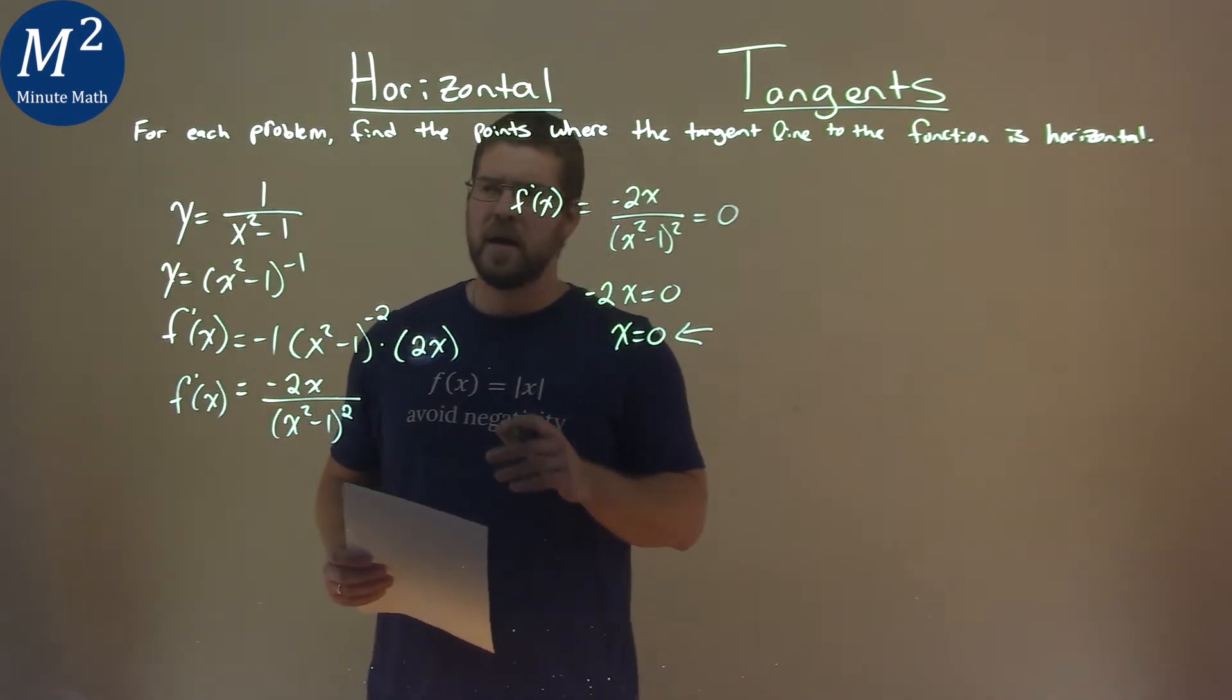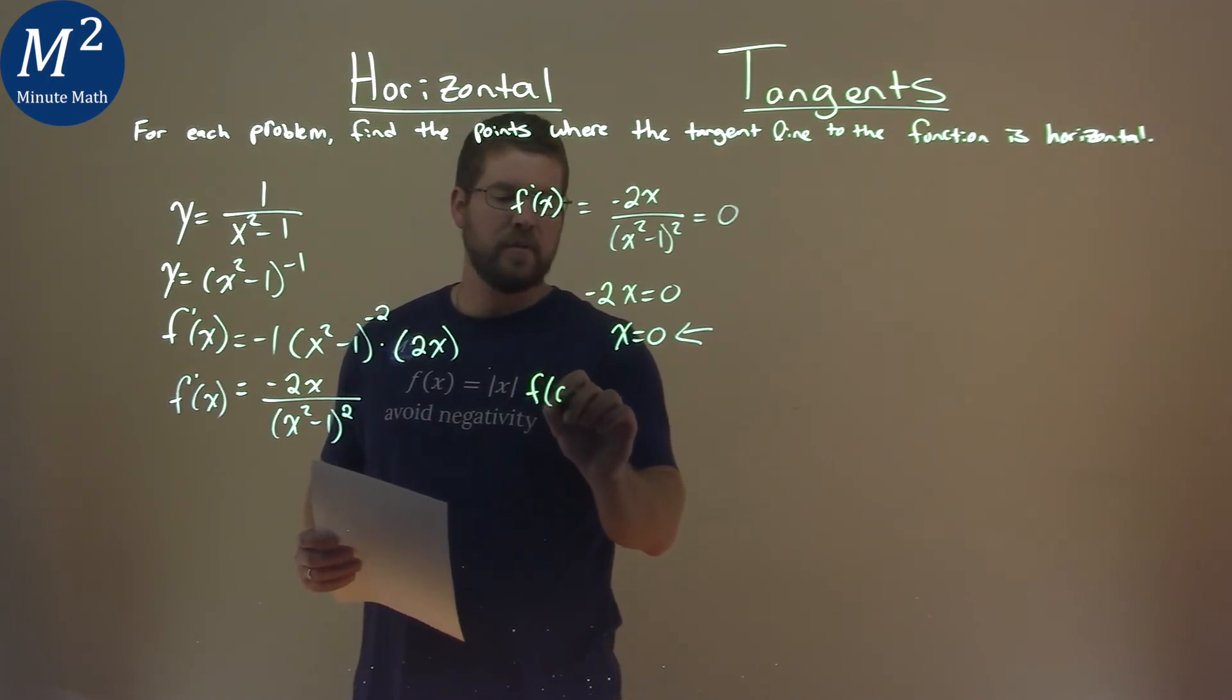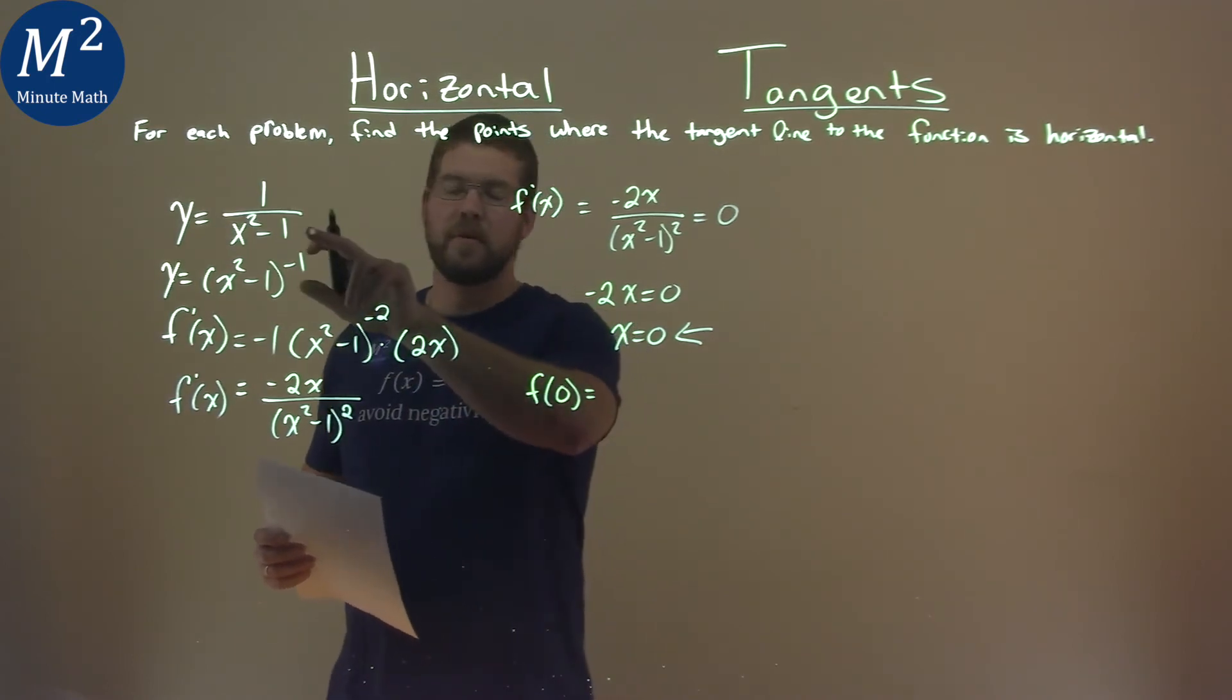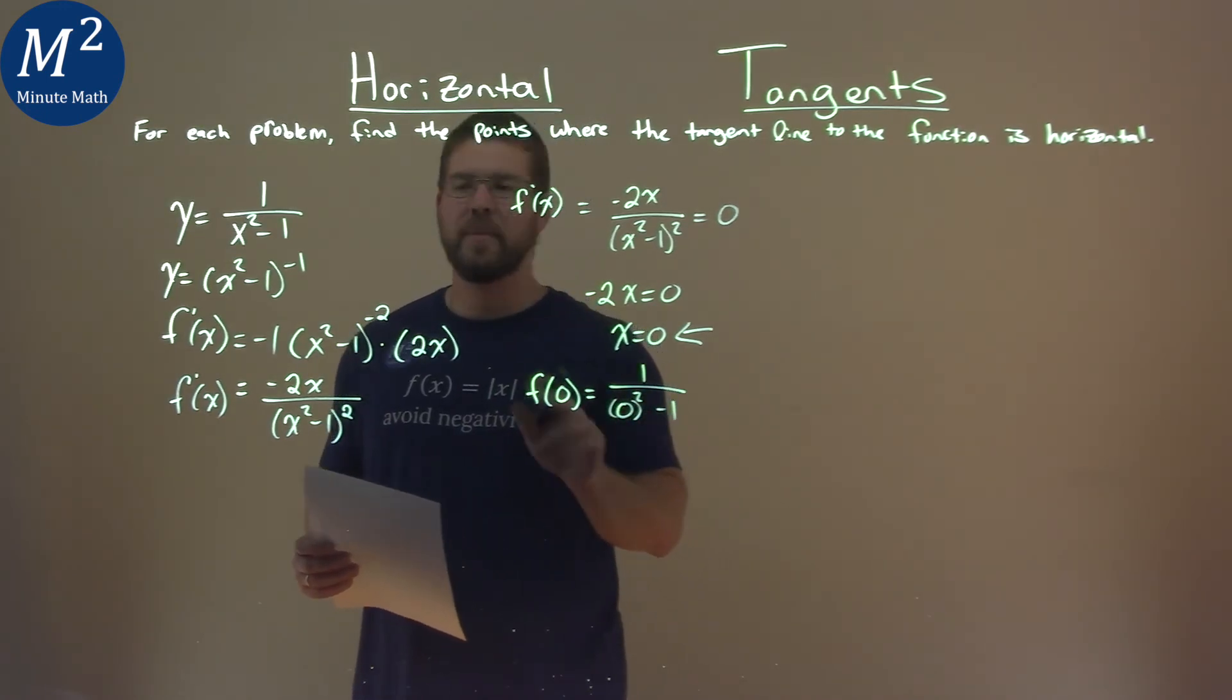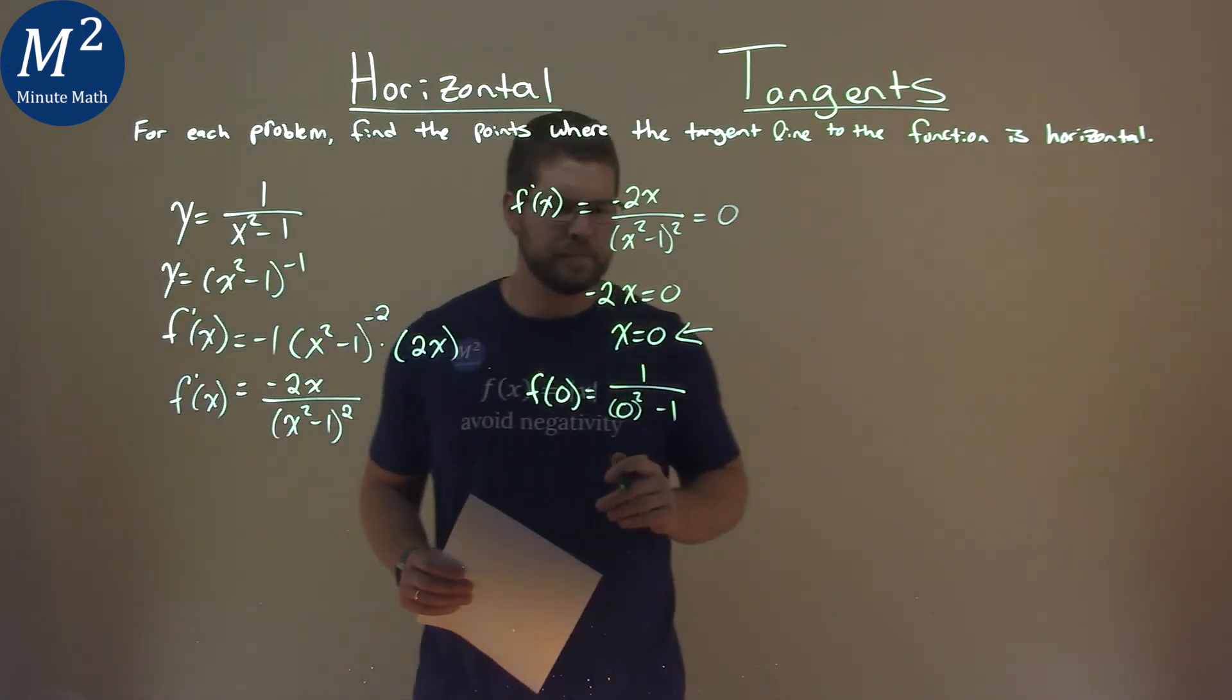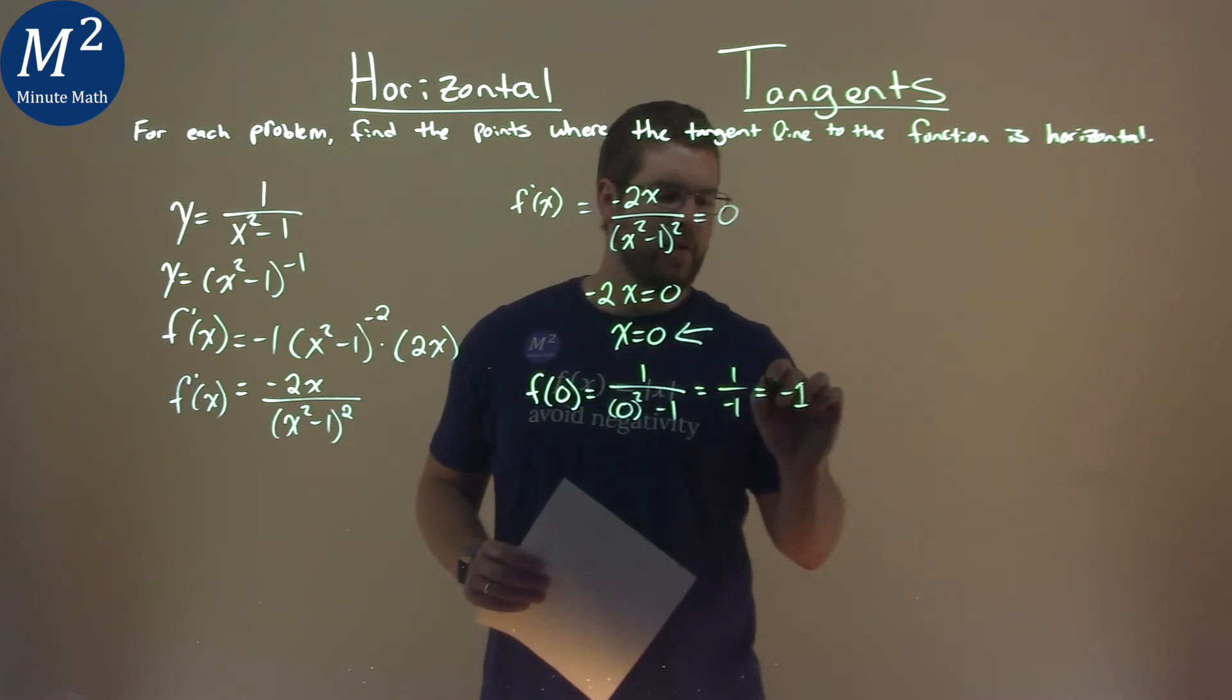And so 0 is the x value where we have our tangent line being horizontal, but we need to find the y value. So we start with our original function, f of x, put 0 in for x, and we're seeing what the output is. So we have 1 over 0 squared minus 1, and again, make sure you plug it into our original function. Well, this comes out to be 1 over negative 1, which is negative 1.